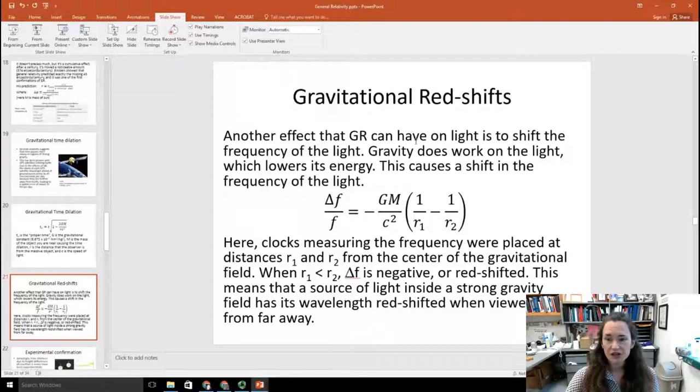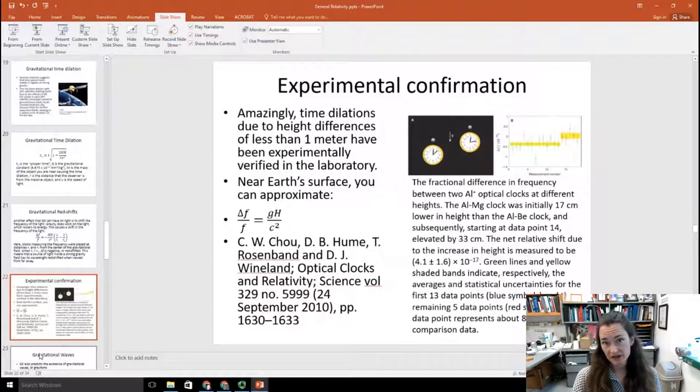Now, another effect that general relativity can have on light is to shift the frequency of the light, or cause a red shift or a blue shift. Gravity does work on the light, and that lowers its energy. And this causes a shift in the frequency of the light. The equation which would predict that is that the shift in frequency delta f divided by the frequency f is equal to minus gm over c squared times 1 over r1 minus 1 over r2. Now here, if you're using a clock to measure the frequency, then they're placed at distances r1 and r2 from the center of a gravitational field. So if r1 is less than r2, then delta f is negative or red shifted. And this means that a source of light inside a strong gravity field has its wavelength red shifted when it's viewed from far away.